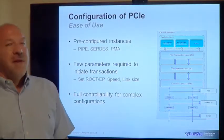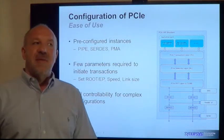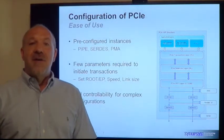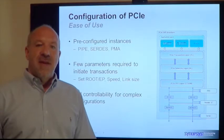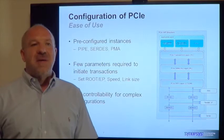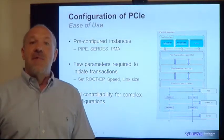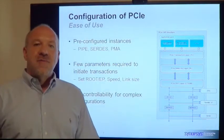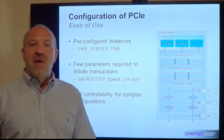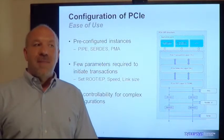First, I'd like to talk about ease of configuration. The VIP has a lot of features built into it that really enable you to get going quickly. We have pre-configured instances that you easily plug in, and by doing that you tell us if you're using PIPE, SERDES, or PMA — it also tells us the maximum number of lanes you're using. These instances come up pre-configured out of the box, ready to run. We give you a lot of parameters where you can configure specific timing and so forth, but the key point is you can get going quickly out of the box.